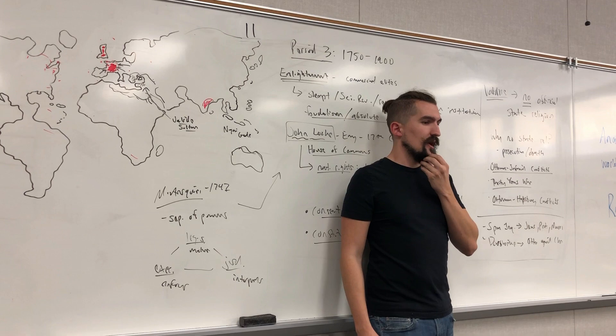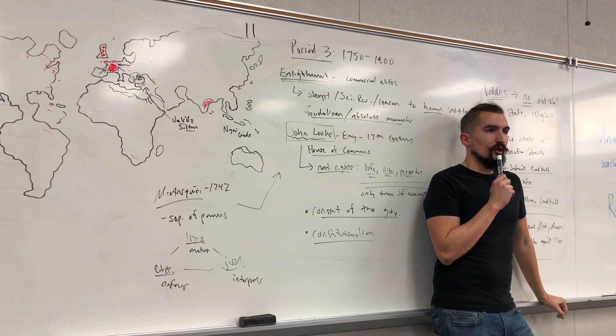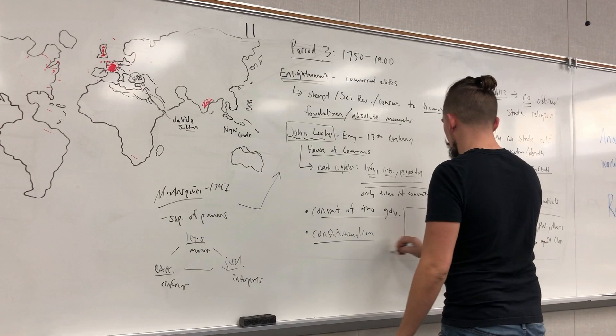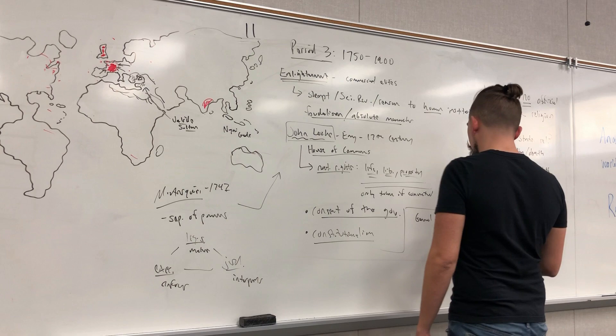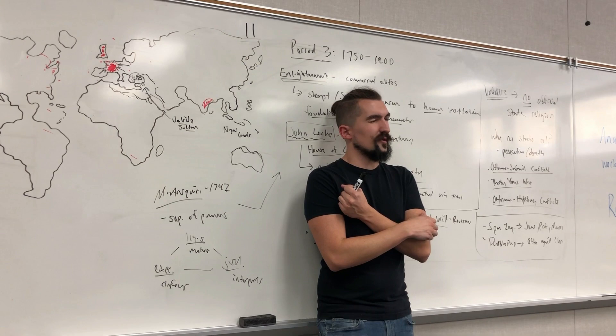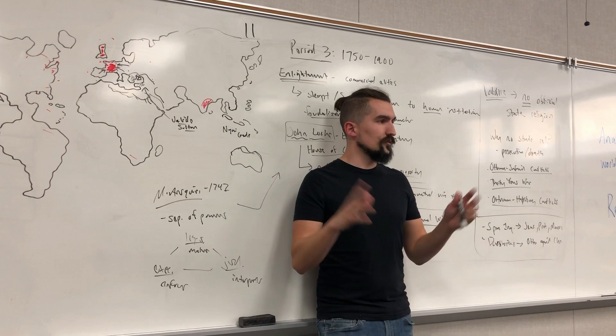Rousseau believed in having everybody involved in government — at least males, as he was not a fan of women's involvement, making him a bigot. His concept was the general will — all people should be involved in making the laws so laws reflect what people want. He wanted full participation, at least among educated males, in the government. Essentially he wanted greater participation so laws are more representative of the people.